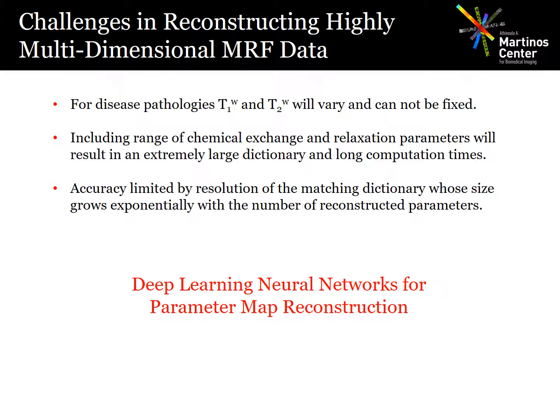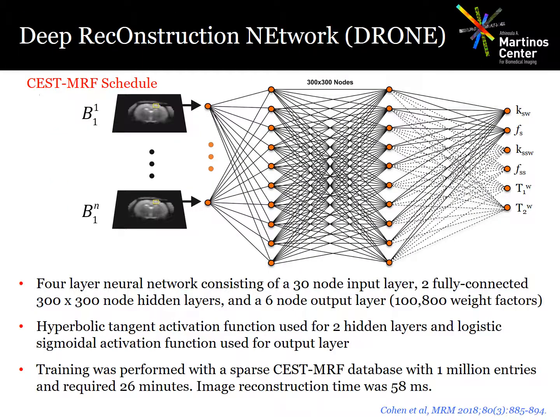Therefore, we propose to use a deep learning trained neural network to do the parameter reconstruction. The idea is to use a neural network to find a functional mapping between the measured data and the underlying quantitative tissue map. The network consists of an input and output layer and two fully connected hidden layers. There are two big advantages to this approach: first, the network can be trained with a sparse dictionary that's much smaller than what would be needed with an equivalent dictionary matching approach — in this case, a six-dimensional dictionary with a million entries. The second advantage is that the reconstruction time is almost instantaneous, requiring only 58 milliseconds.